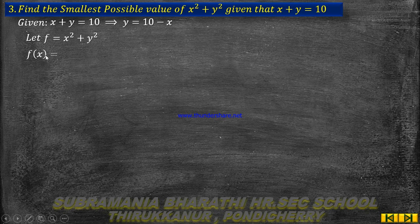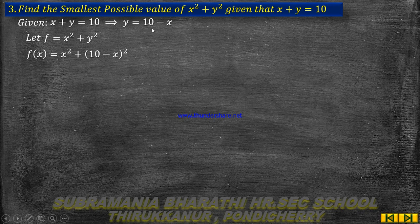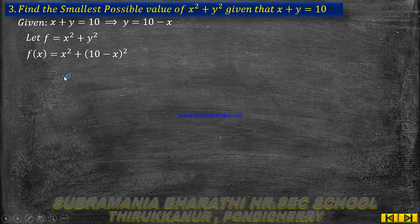Now substitute the value of y. f of x equals x squared plus y — substituting y equals 10 minus x — so f of x equals x squared plus (10 minus x) whole squared.